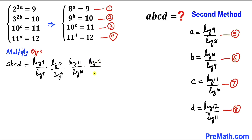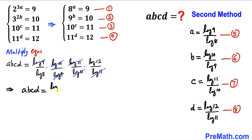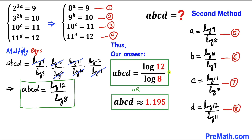We can see that log(9) cancels, log(10) cancels, and log(11) cancels, leaving log(12) / log(8) on the right-hand side. Therefore abcd = log(12) / log(8), which is approximately 1.195. That's our abcd value in logarithmic form and in decimal form. Thanks for watching, and please don't forget to subscribe for more exciting videos!